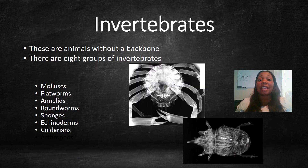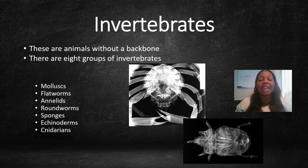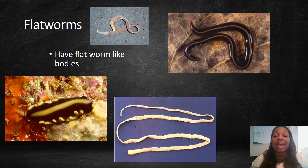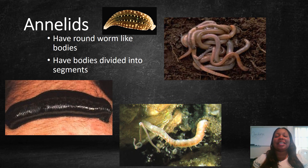Now we're moving on to invertebrates — animals without a backbone. There are eight groups of invertebrates: mollusks, flatworms, annelids, roundworms, sponges, echinoderms, and cnidarians. First, mollusks crawl on a fleshy pad and can have a shell; examples include slugs and snails. Flatworms have flat, worm-like bodies — a tapeworm is an example. Annelids have round, worm-like bodies divided into segments; one common annelid is the earthworm.